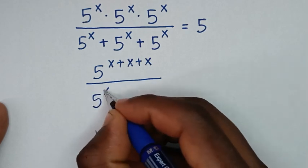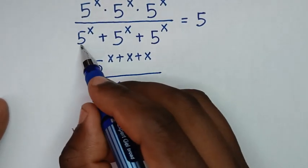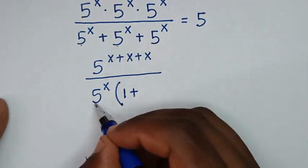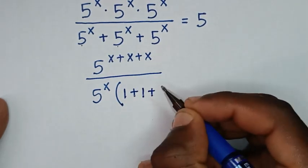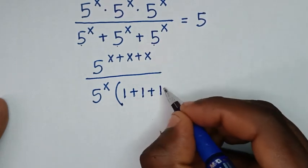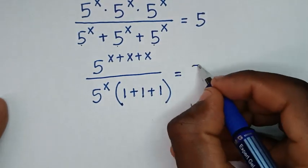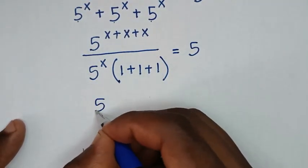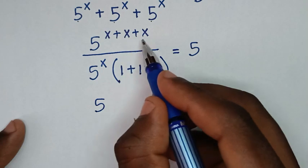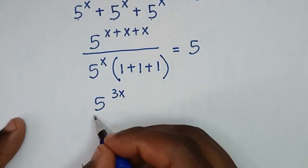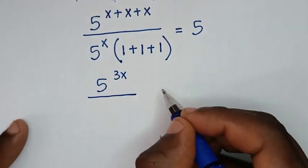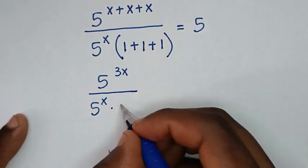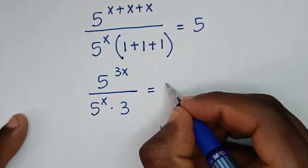We take 5 power of x out of the bracket. Then 5 power of x divided by 5 power of x is 1, plus 1, plus 1, giving us bracket 1 plus 1 plus 1. So the expression becomes 5 power of x plus x plus x over 5 power of x times 3, which equals 5.